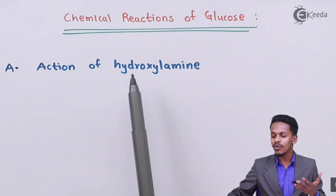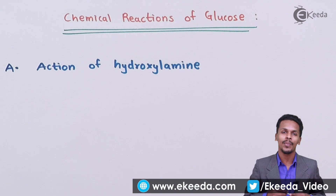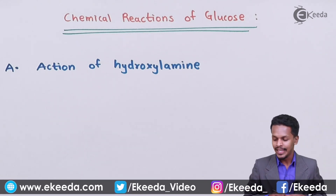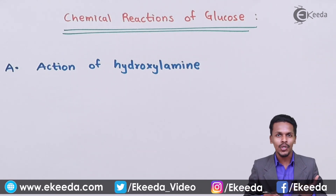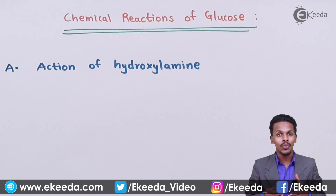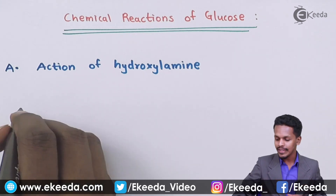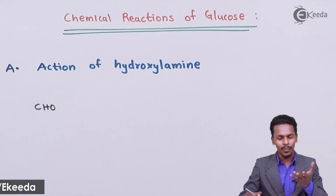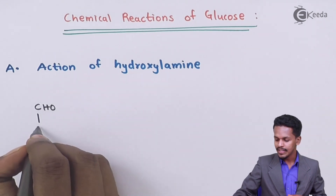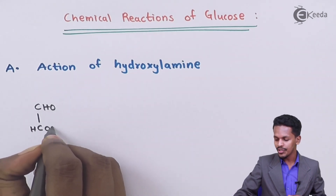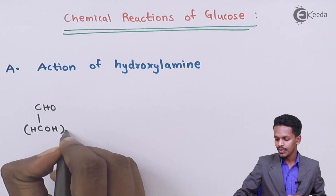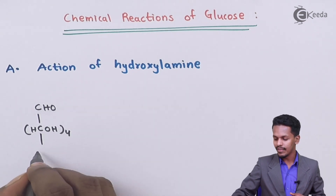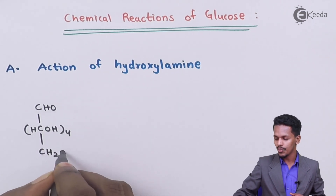What is the action of hydroxylamine on glucose? For that, let me introduce the structure of glucose. We have understood how to draw the structure of glucose in Fischer's projection formula. In this case the structure is CHO at the top, then CHOH four times, and the lower part consists of CH2OH.